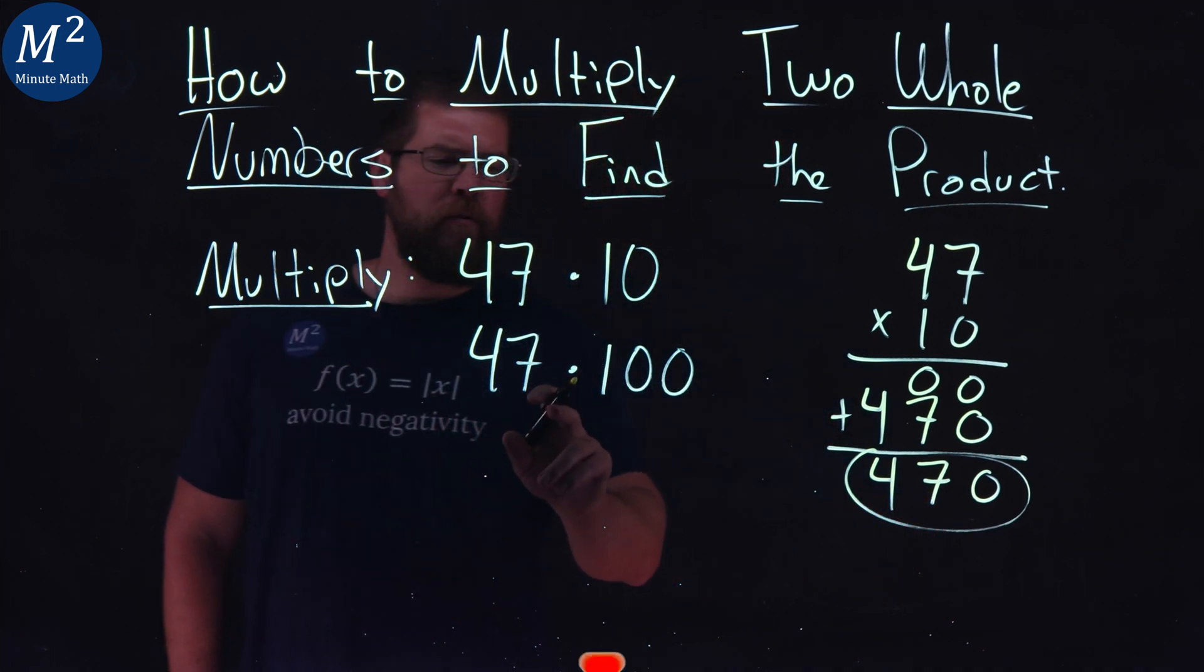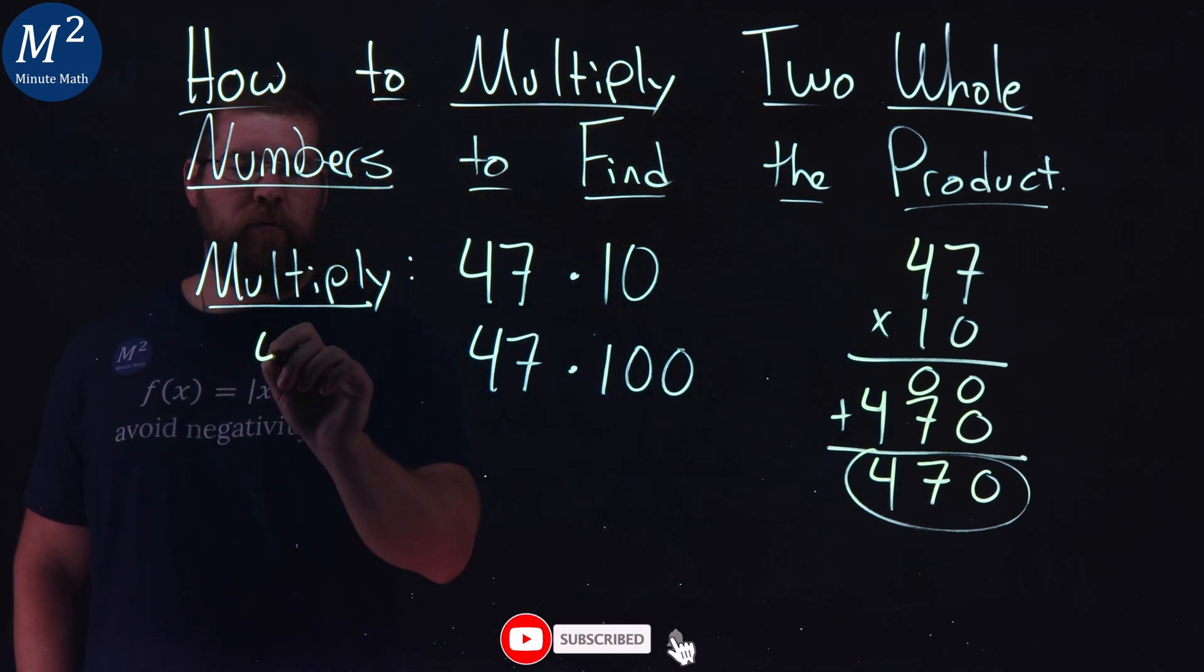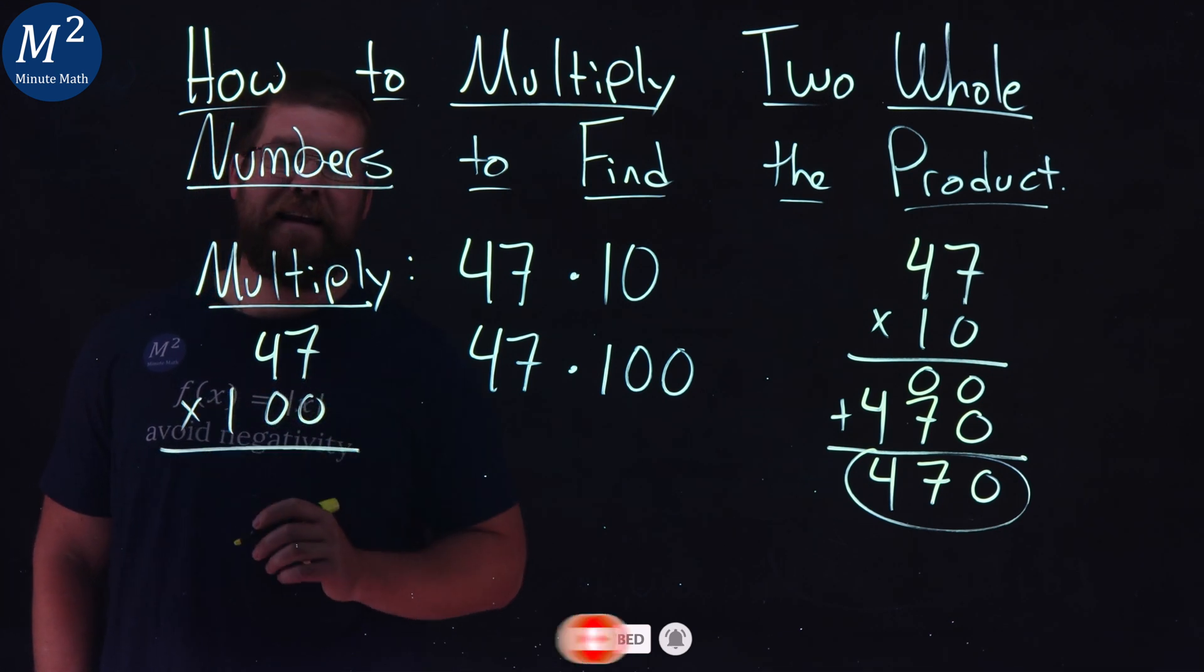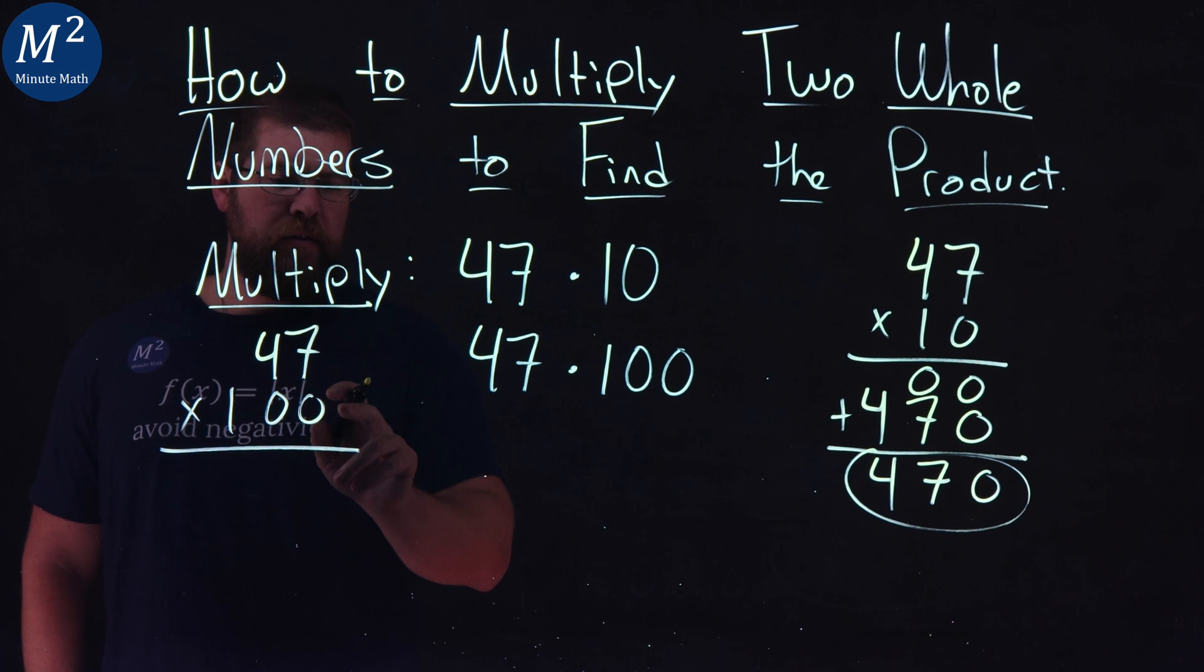Let's do it again with 47 times 100. So I have 47 here, and I put 100 underneath it, and we're going to multiply this out. Same process, zero times seven is a zero, and zero times four is a zero.